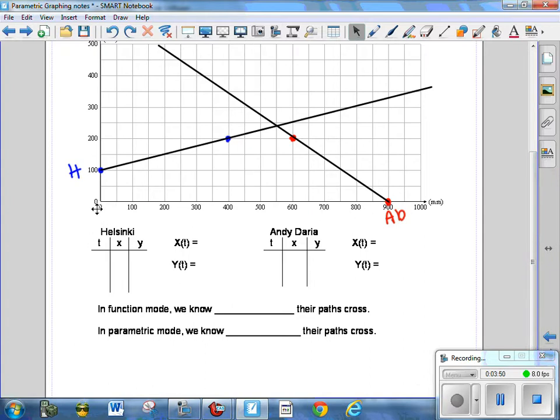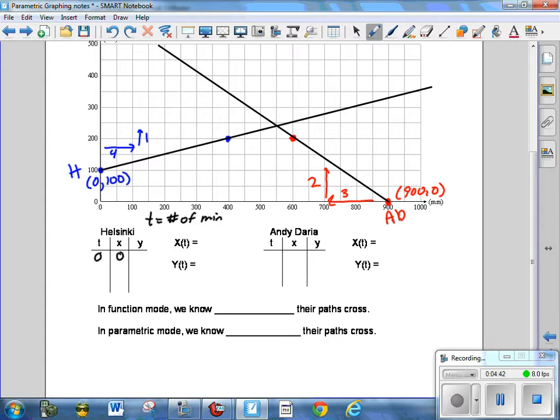So the first thing we're going to do is write parametric equations to represent the paths of each of these two ships. For the Helsinki, we're going to start with knowing what is its initial position. The initial position is at zero in the X direction and 100 in the Y position. And it continues to move four millimeters to the east and one north every minute.